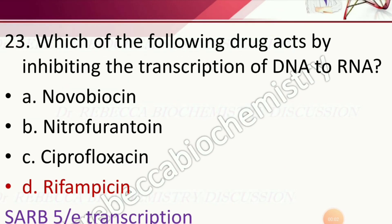Question 19: Which of the following drugs acts by inhibiting the transcription of DNA to RNA? Options are novobiocin, nitrofurantoin, ciprofloxacin, and rifampicin. The correct answer is rifampicin.